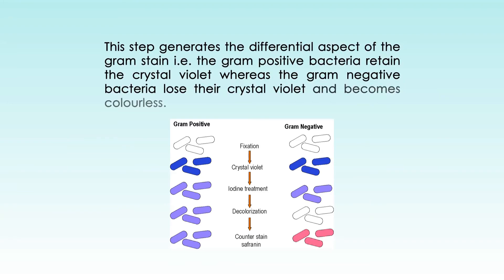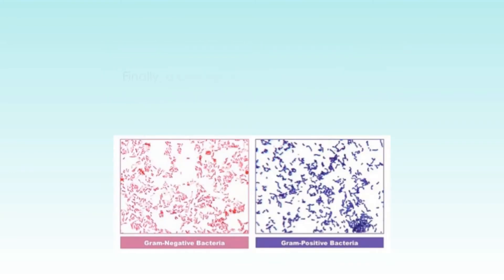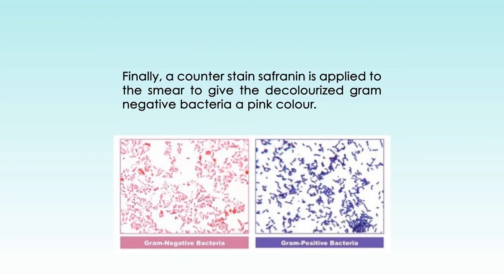This step generates the differential aspect of the gram stain: gram-positive bacteria retain the crystal violet, whereas gram-negative bacteria lose the crystal violet and become colorless. Finally, a counter stain known as safranin is applied to the smear to give the decolorized gram-negative bacteria a pink color.